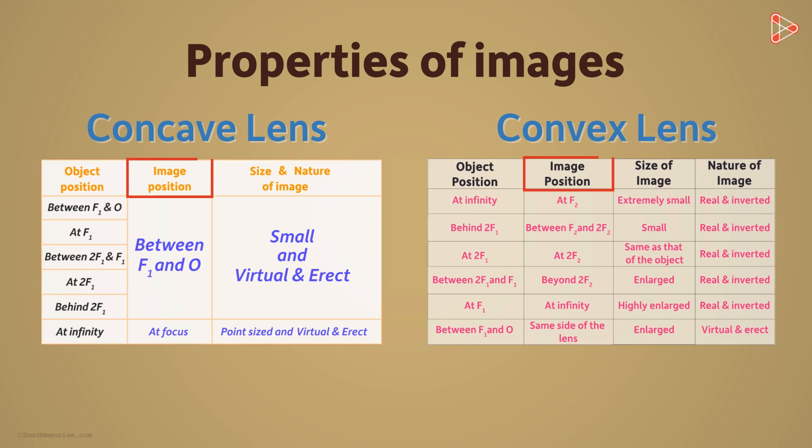One of the properties of an image is its position in space. From these tables, we see that the position of the image changes as the object's position changes.